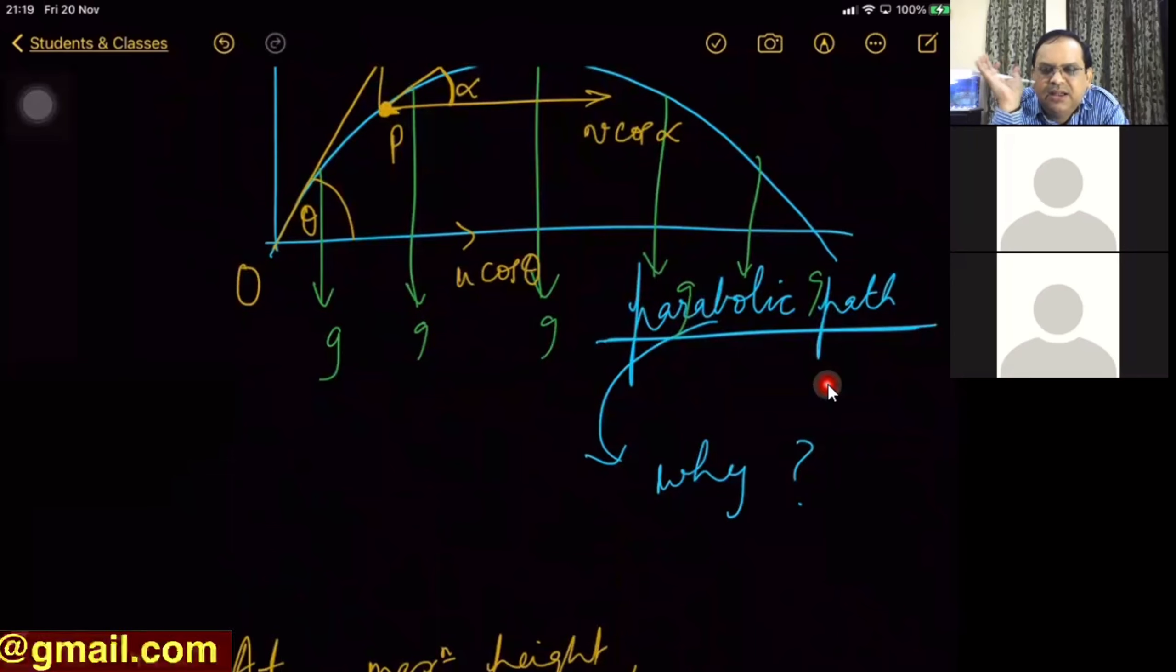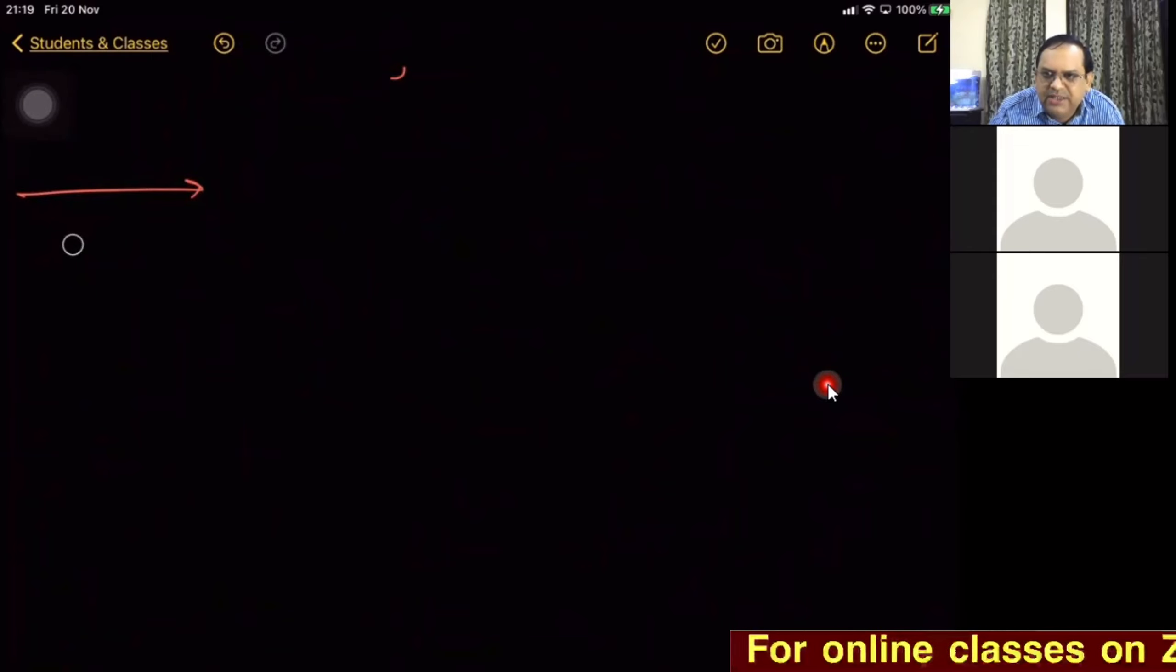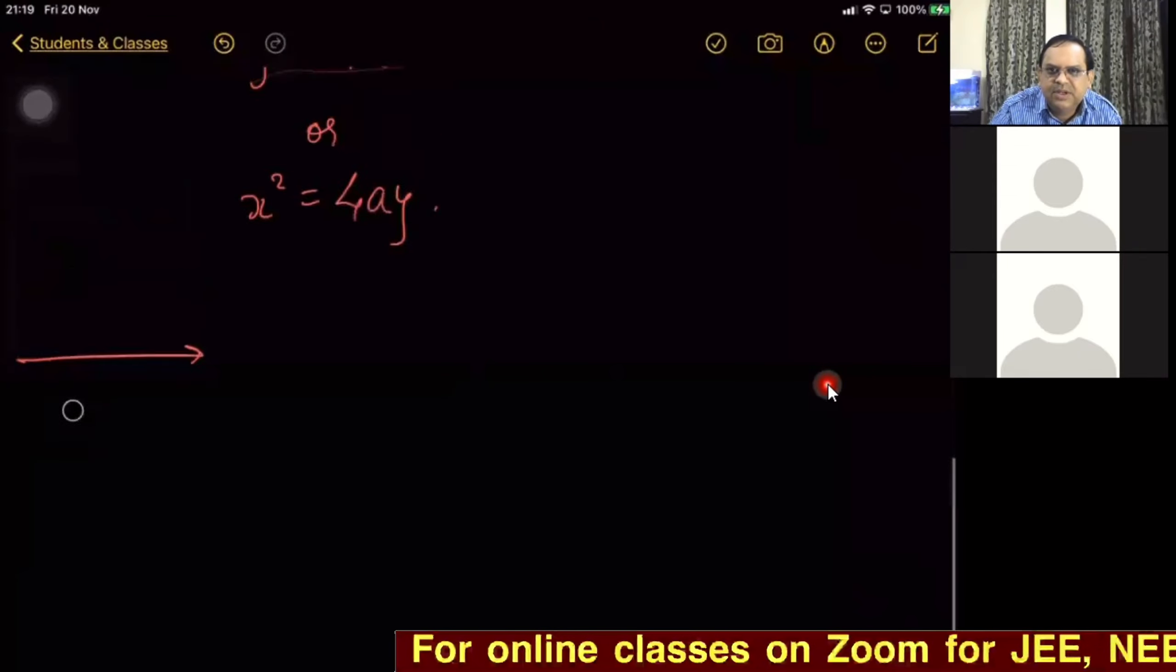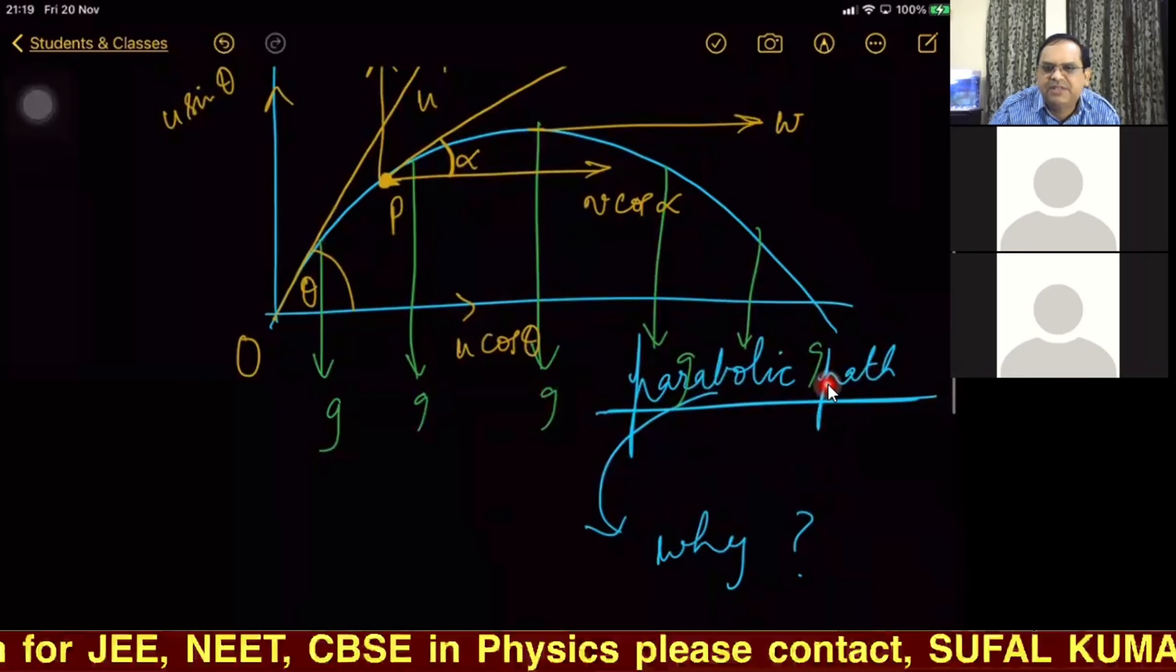And then finally we'll say that it is covering parabolic path. So that derivation also I'll be covering. Have you covered that derivation proving that this projectile covers parabolic path?